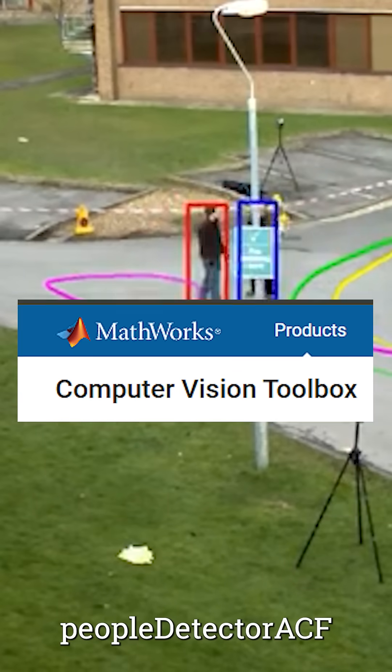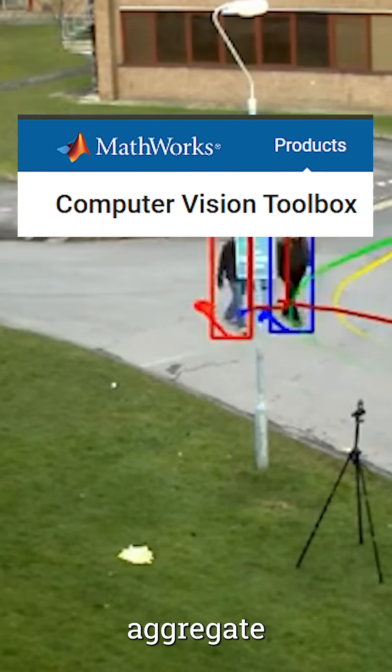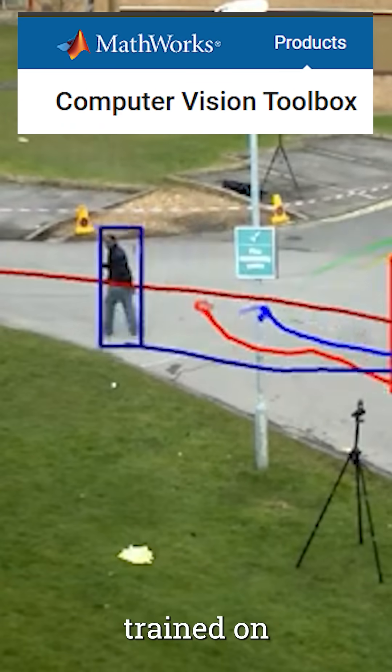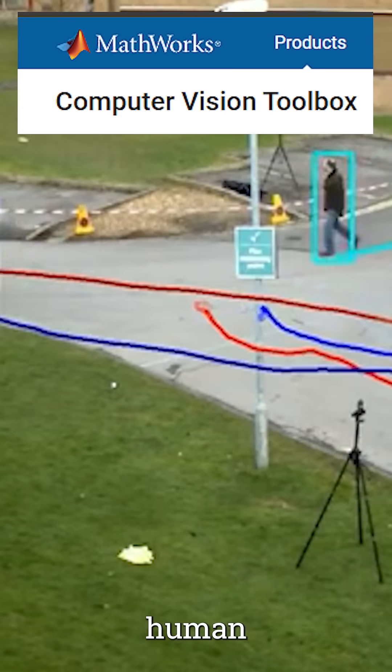The vision.PeopleDetectorACF function implements an aggregate channel features pedestrian detector that has been pre-trained on large sets of upright human figures.